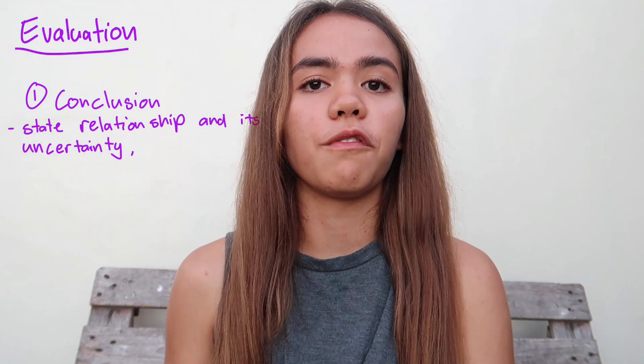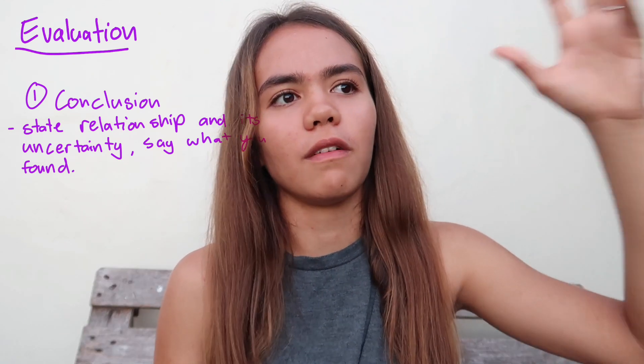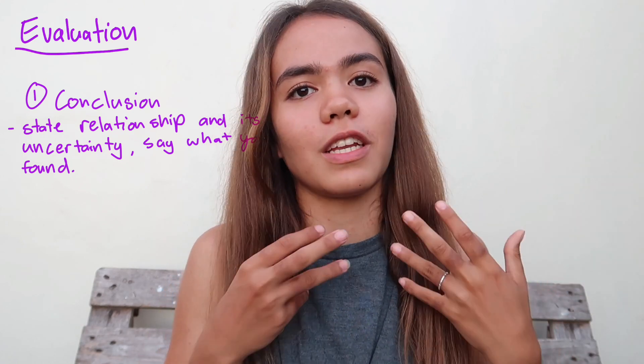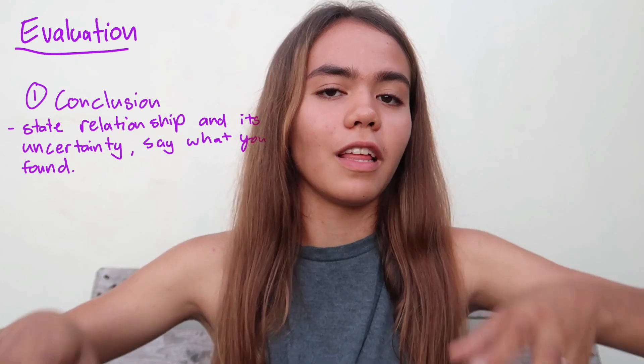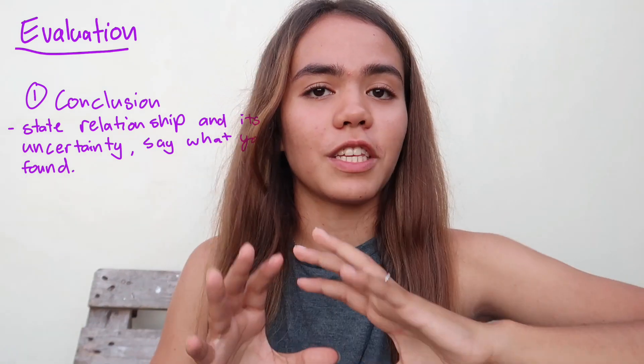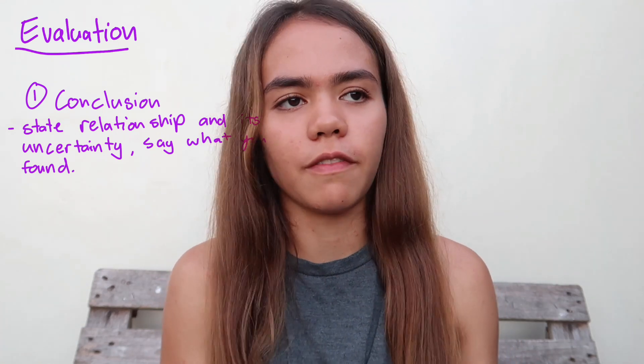Finally, you have your evaluation section, in which you interpret your data, draw conclusions from it, and judge how reliable your experiment was. In this section, you want a conclusion — which a lot of people get confused about, but it's actually quite simple. All you really need to do is describe what you found in your IA: whatever relationship you found between your variables, state that relationship, and if you came to a number, state it with its uncertainty. This is not an English essay where you recap everything. You don't need to summarize or bring in anything new — you're just concluding, basically saying: I did this experiment and this is what I found.